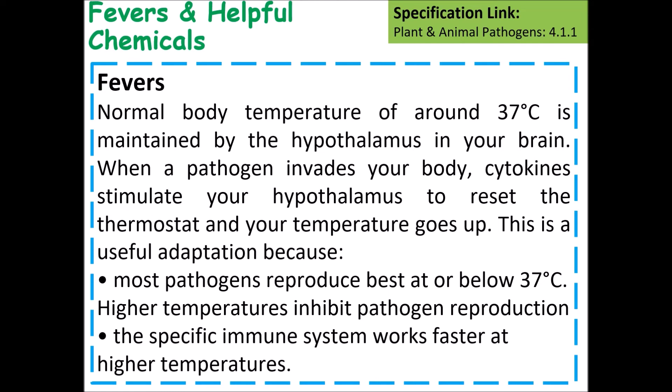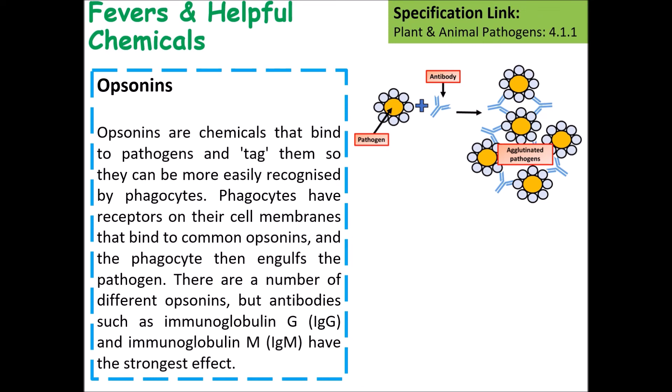Opsonins can also be produced. Opsonins are chemicals that bind or tag different pathogens. A good example of an opsonin is an antibody. These antibodies bind to specific antigens on the surface of the pathogen and either cause them to agglutinate — stick together — or alert the rest of the immune system, such as phagocytes, that they need to destroy that cell.